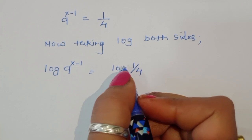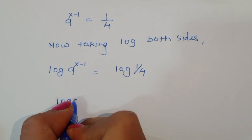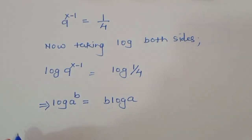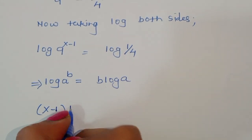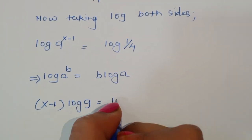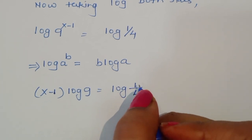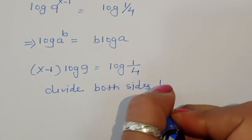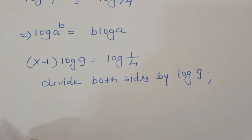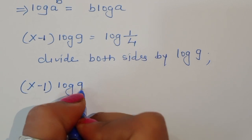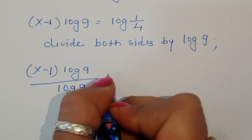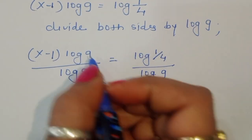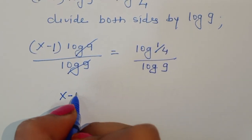Taking log of both sides, we get log of 9 power (x-1) equals log of 1/4. We use the formula log of a power b equals b times log of a. Using this, x minus 1 times log 9 equals log(1/4). Now we divide both sides by log 9, so x minus 1 equals log(1/4) divided by log 9.